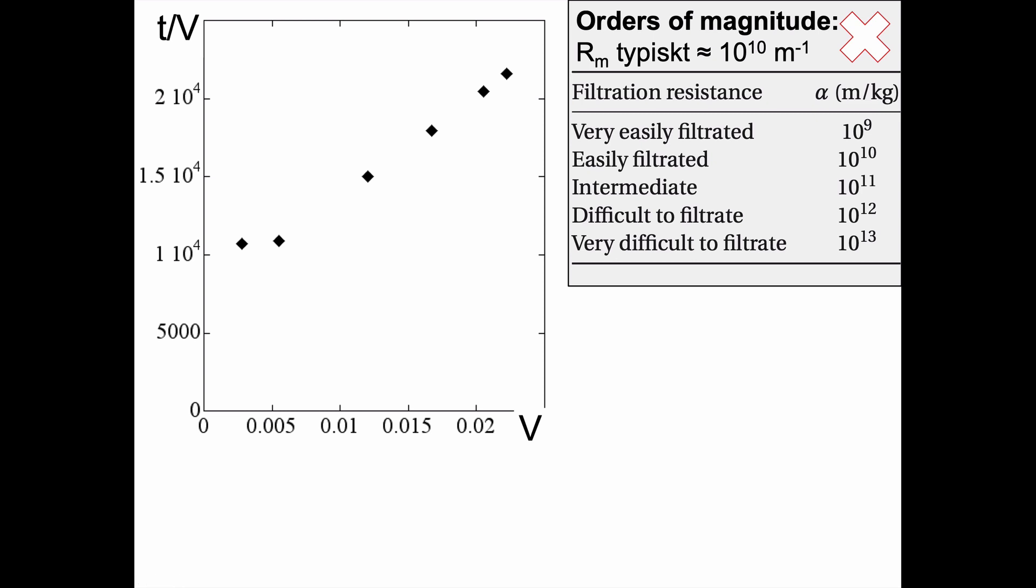So t divided by V you get this equation here. Just to remind ourselves, orders of magnitude for Rm, it's typically 10 to the power of 10 per meter, while the filtration resistance depends on if it's very easily filtrated or very difficult to filtrate, so somewhere between 10 to the power of 9 and 10 to the power of 13.